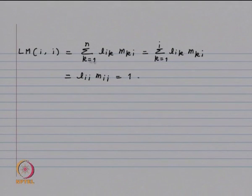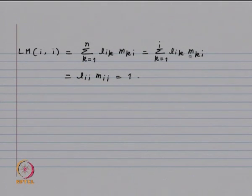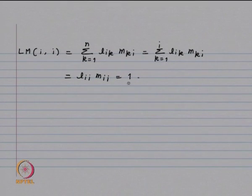It remains to show that the diagonal entries are equal to 1. The diagonal entry (LM)_ii is given by the i-th row of L multiplied by the i-th column of M, which equals summation k = 1 to i of L_ik * M_ki. The only non-zero term is when k = i, giving L_ii * M_ii = 1 * 1 = 1. Thus, the product of two lower triangular matrices is lower triangular, and if the diagonal entries of both matrices equal 1, the product has the same property.